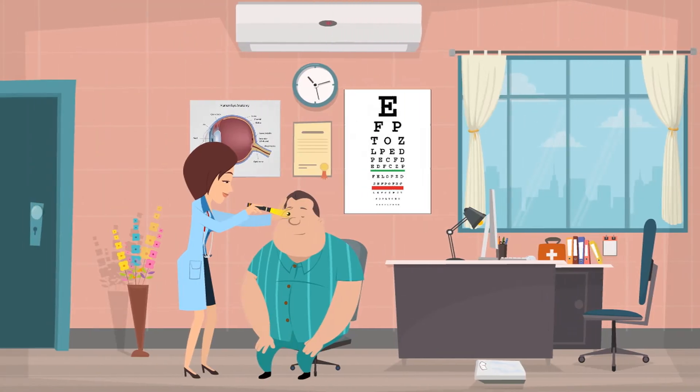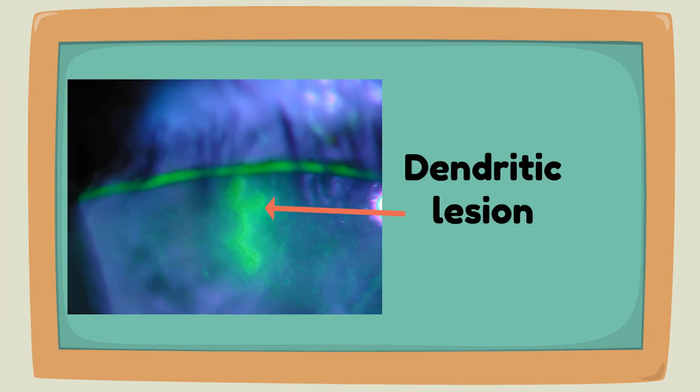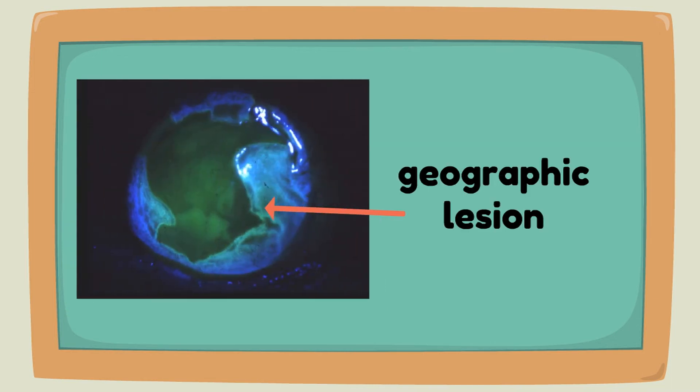Herpes simplex keratitis is mainly diagnosed during clinical examination. Epithelial keratitis is characterized by a dendritic lesion that is linear and branching with terminal bulbs stained with fluorescein, or can also present with a geographic lesion.